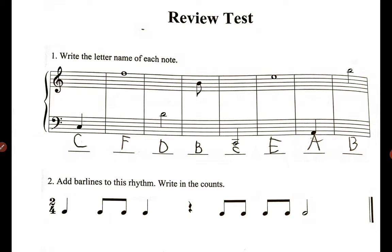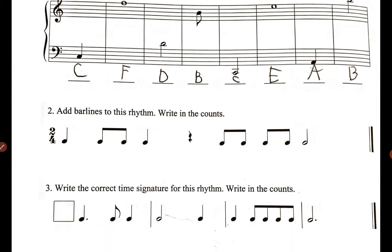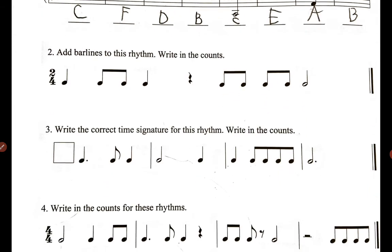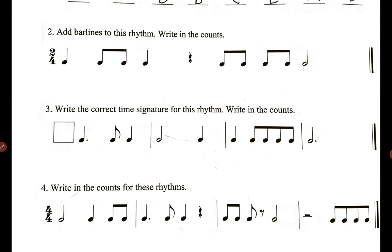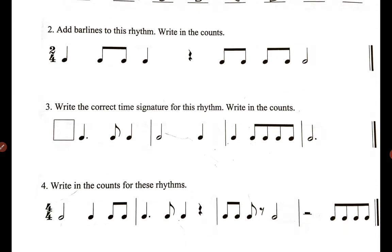So let's review — this is the review test, the first unit in this book, and we're going to go to a second exercise that says add bar lines to this rhythm and write in the counts.